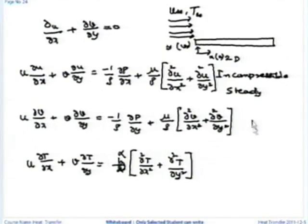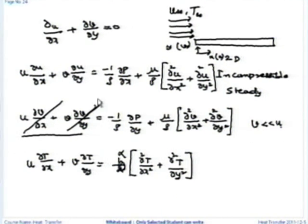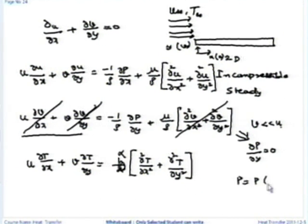What happens to my y-momentum equation? We know very well that v is very small compared to u. So all the terms in the y-momentum equation vanish, which implies that del p by del y equals 0. That means pressure is a function of x only.